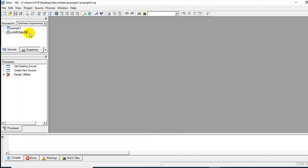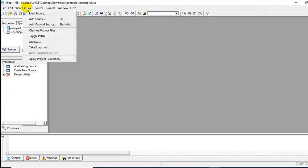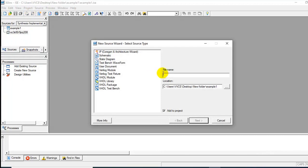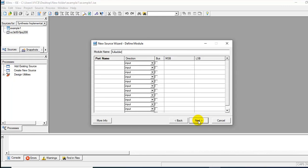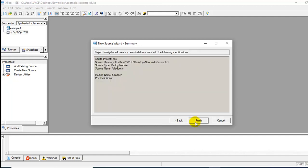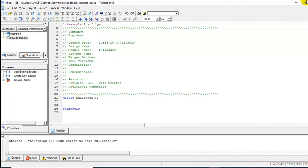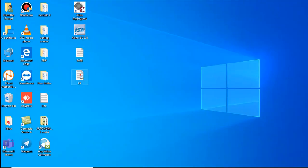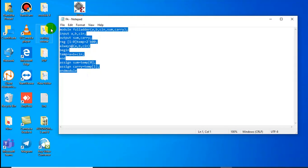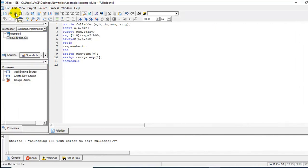The next step will be to enter the design file of full adder. For this, we'll go to the option project, new source. Enter the name for it. It's a Verilog module. We can either enter the inputs here or we can directly enter the design in the file. Save the file.